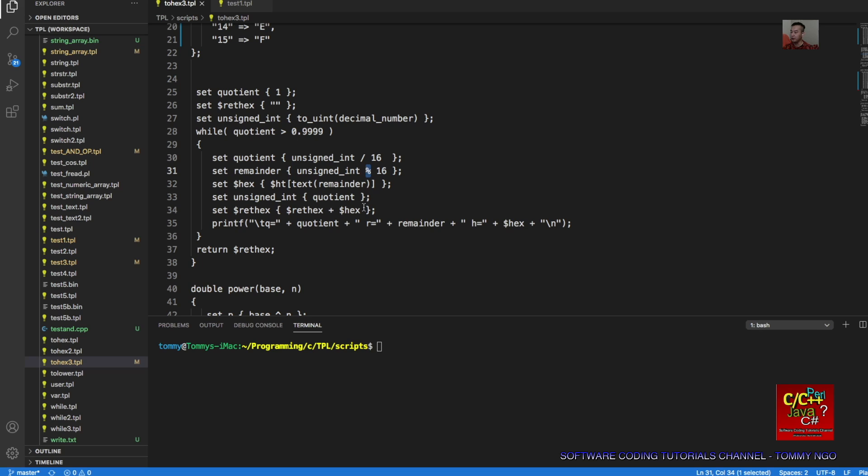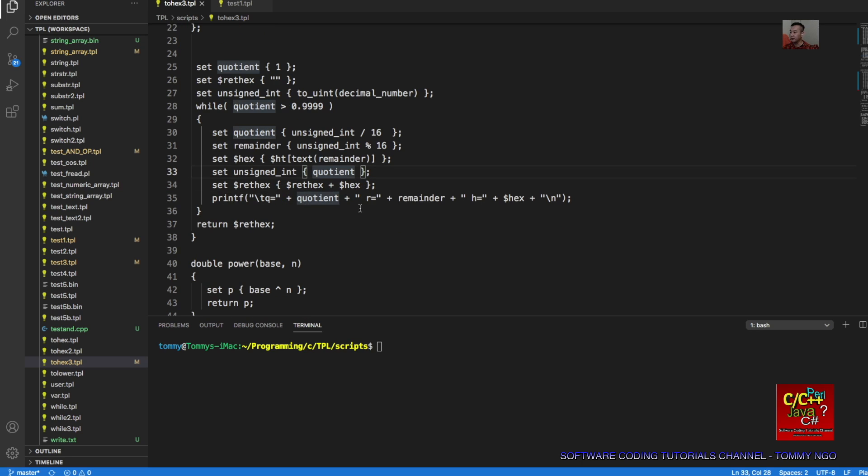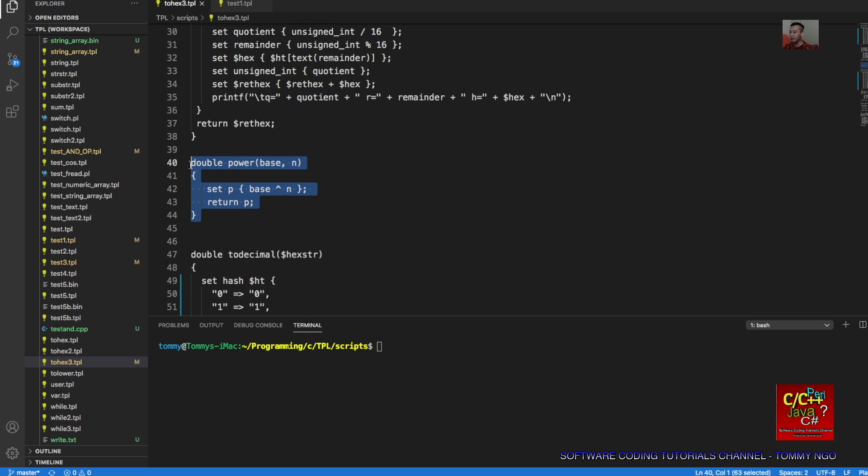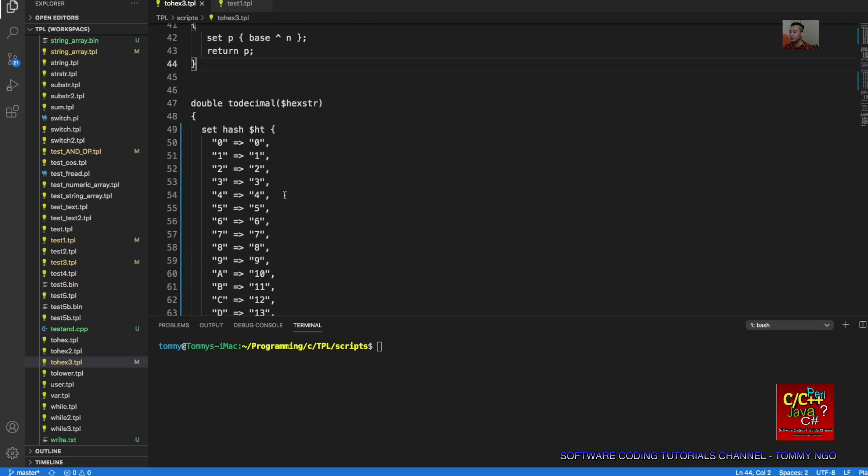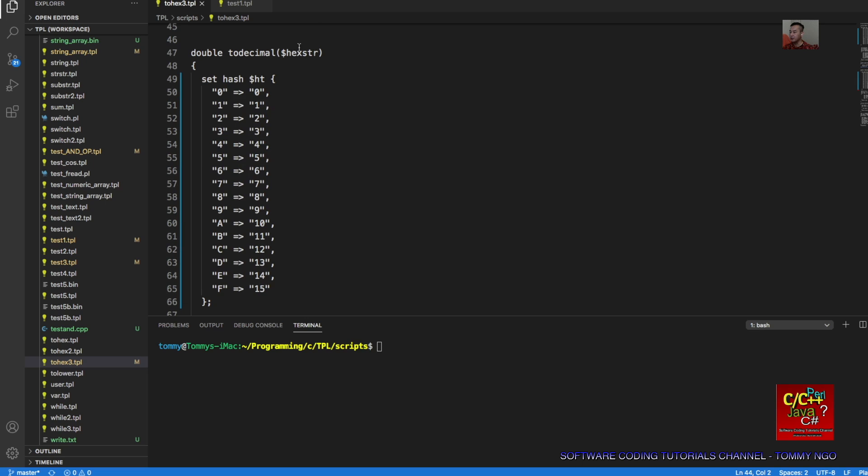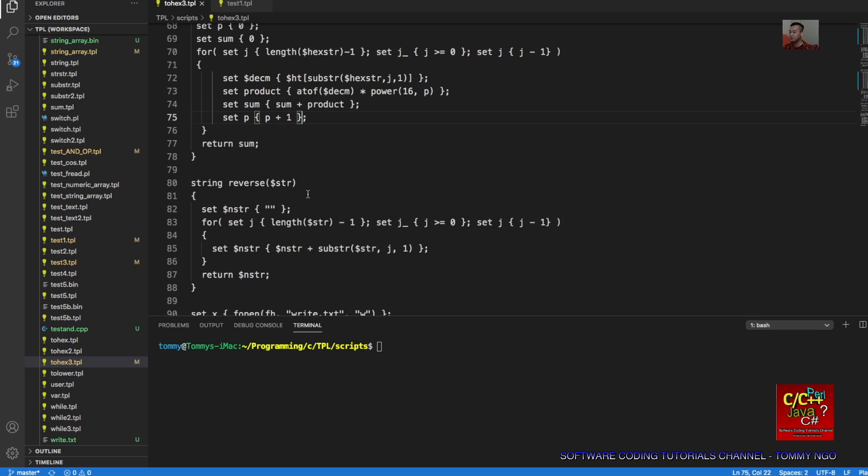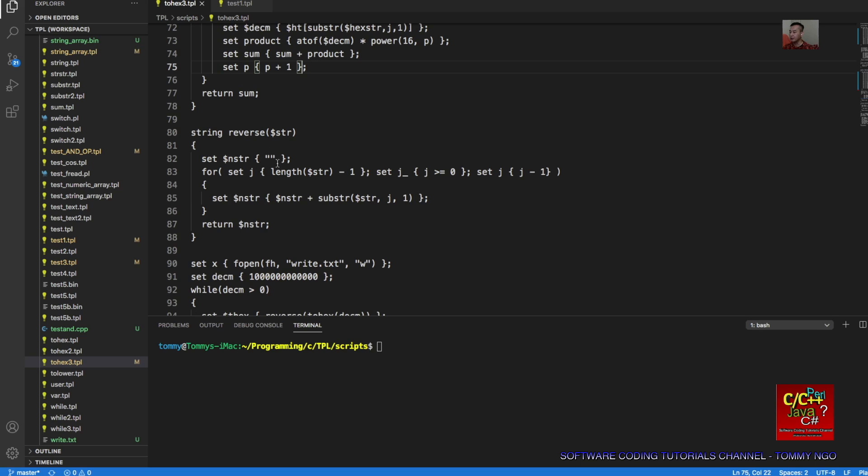Here is a function to calculate power based on base and power exponent. Here's a function that converts the hex string back to decimal, using substring and hash table. Here's a reverse string. You can reverse using this algorithm.